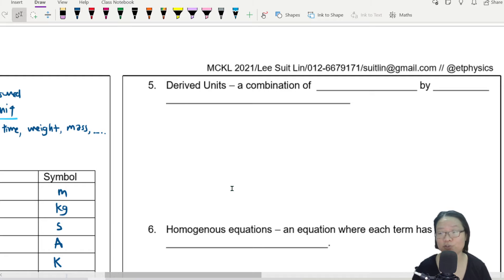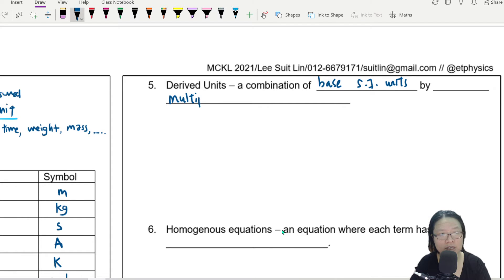So what do we call them then? We call them derived units. Derived units is a combination of the base SI units by multiplication or division. So when it comes to derived units, I'll give you a few examples.